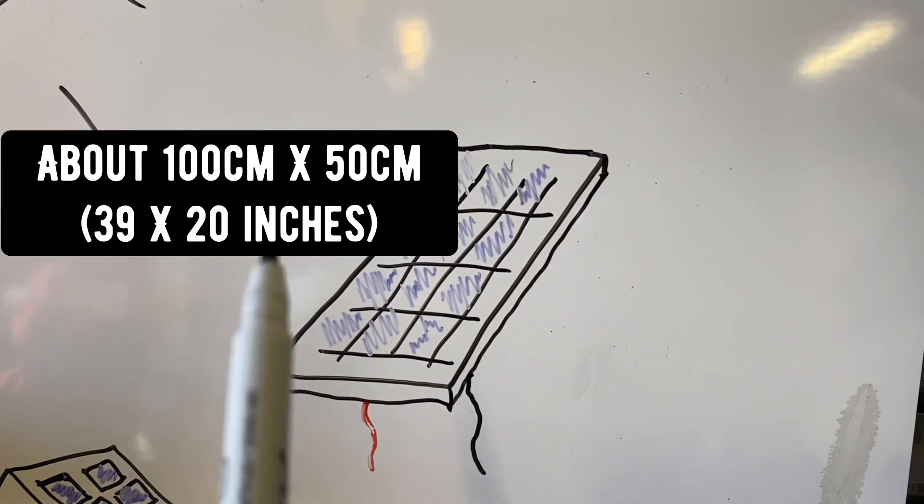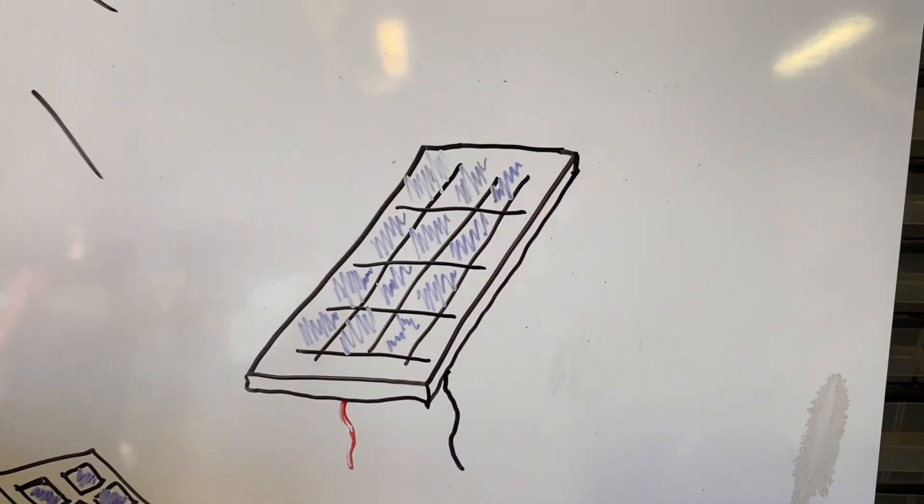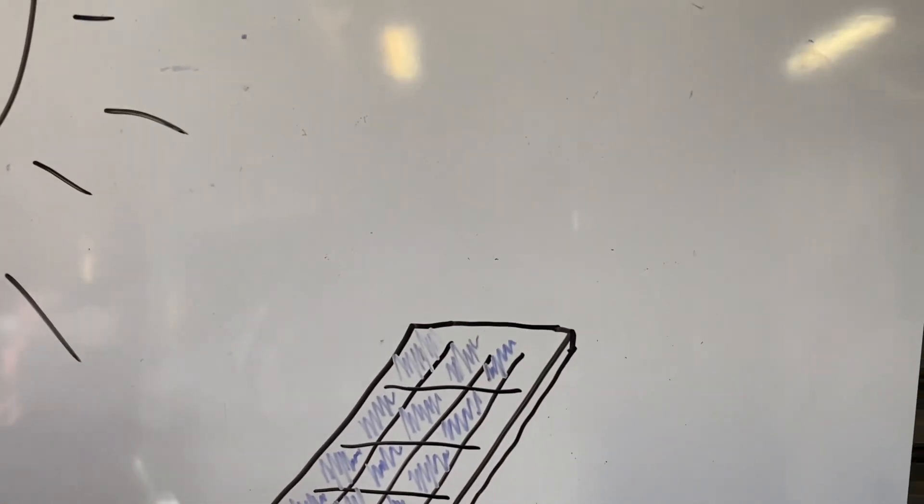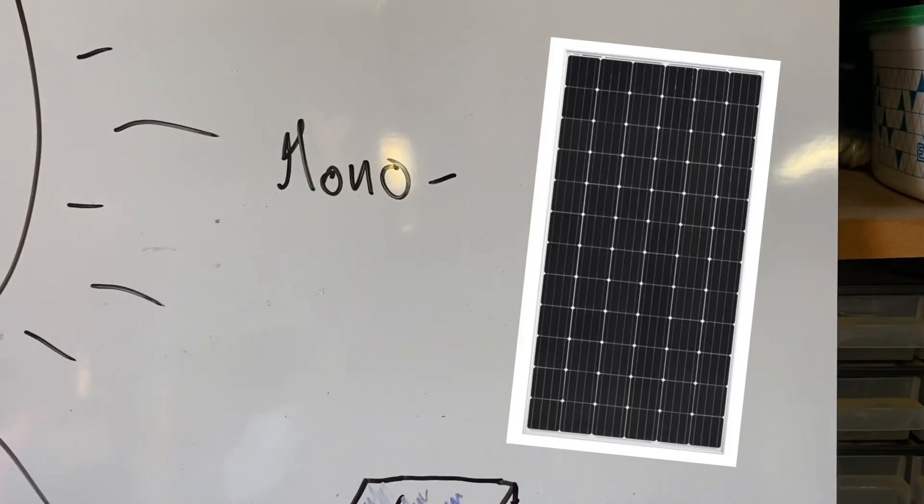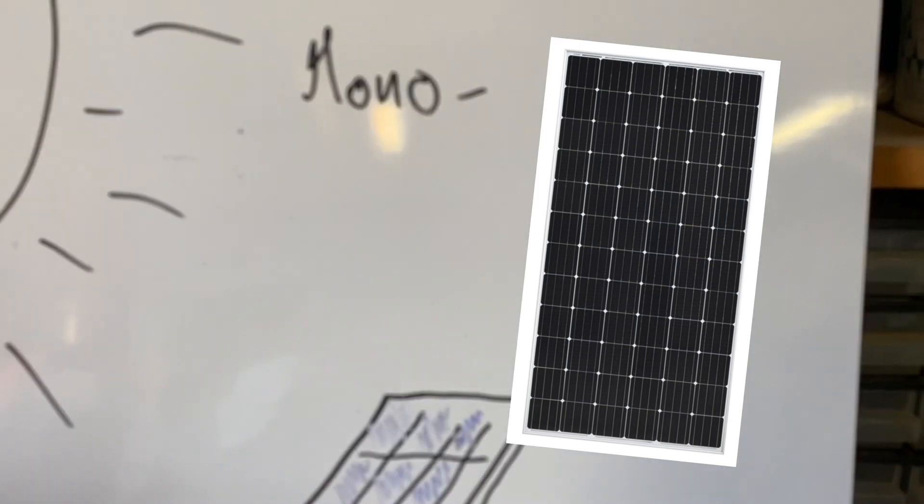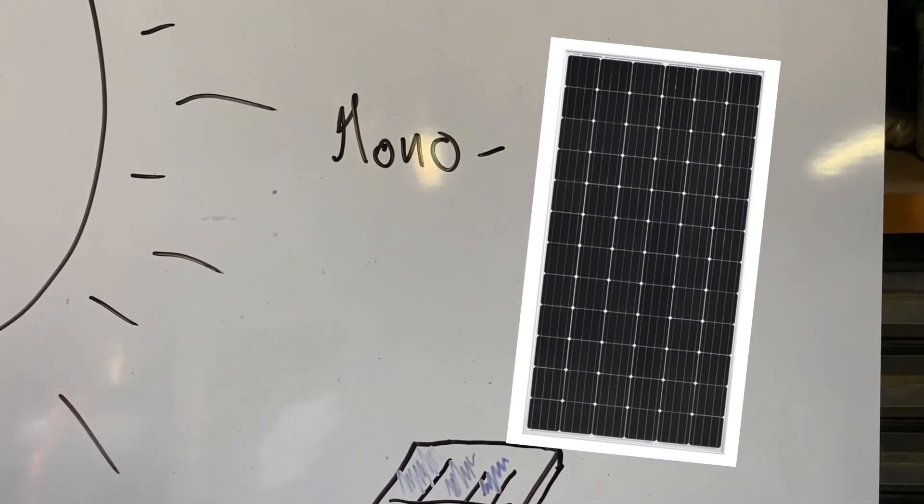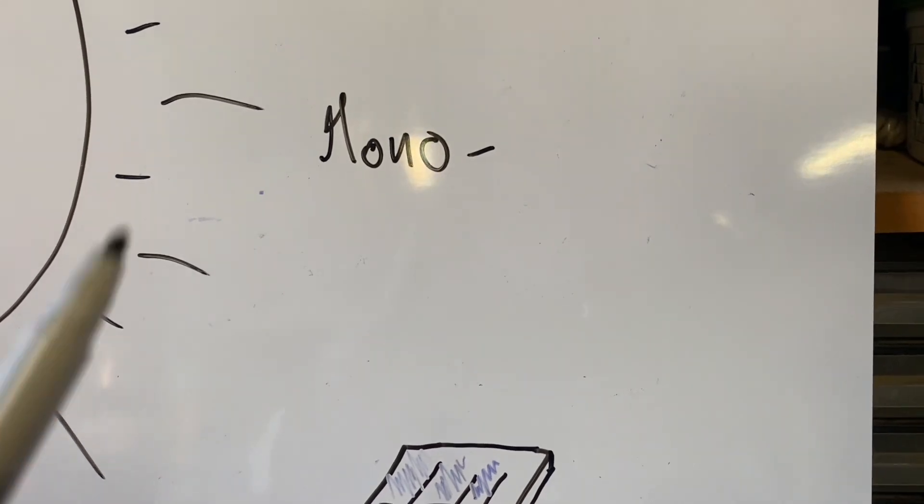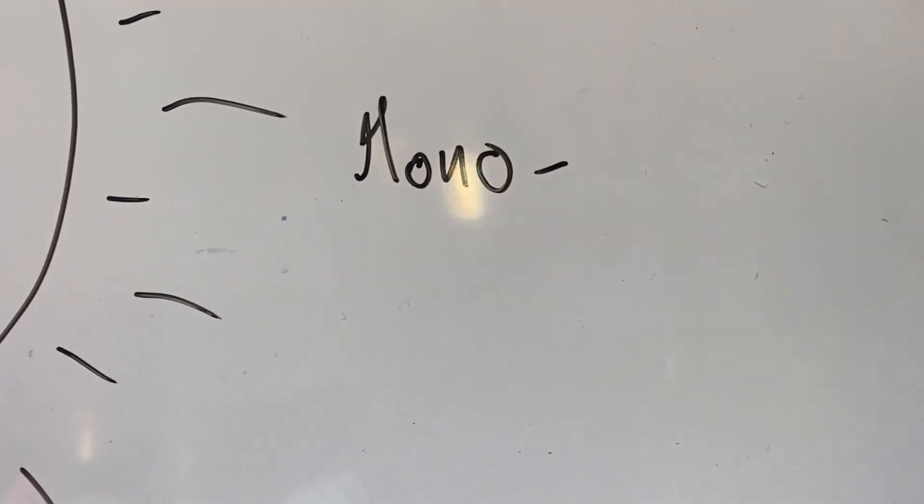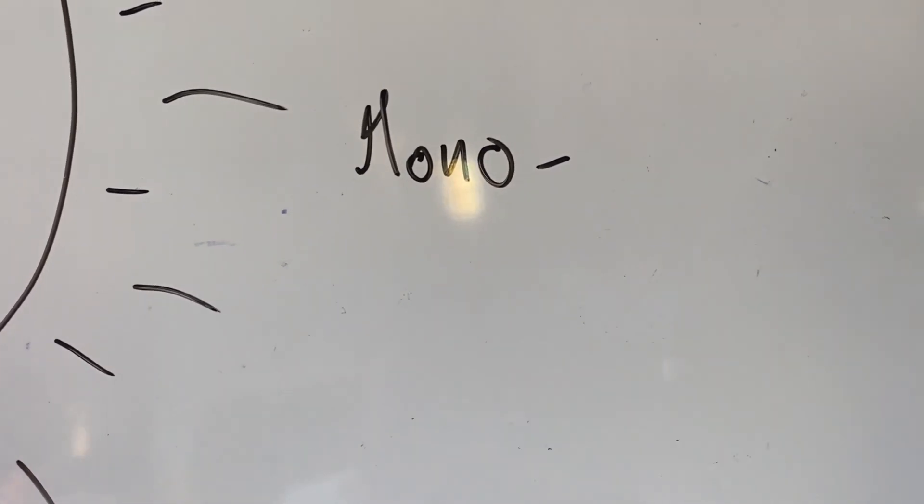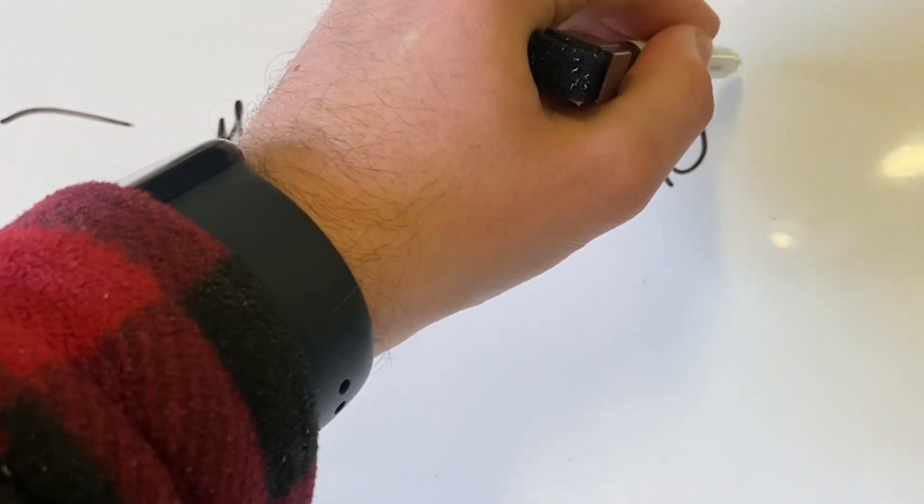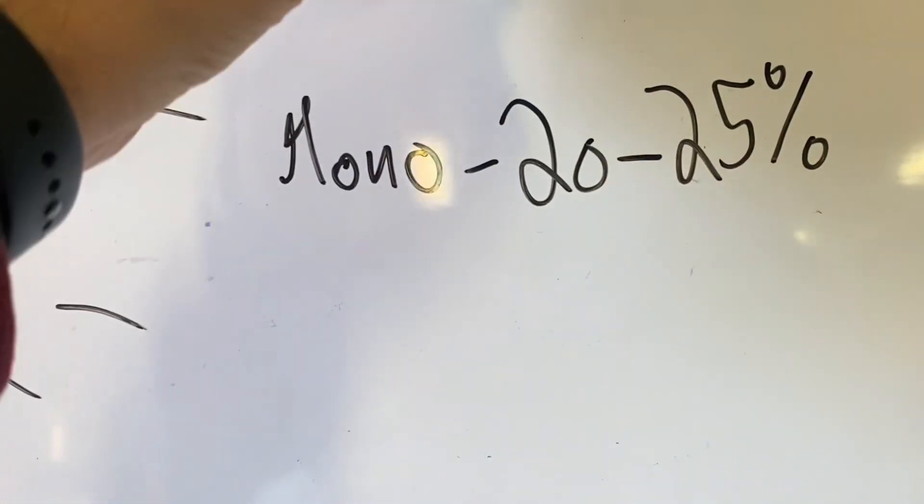There are four main types of solar panels, starting with the monocrystalline. These are the fancy ones that you see with a sleek black look to it. They are made from a single crystal structure, making them the most efficient solar panel types, typically around 20 to 25 percent efficient. They work really well in low light conditions, however they come at a higher cost.